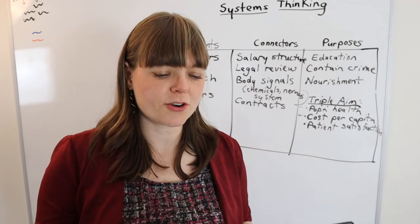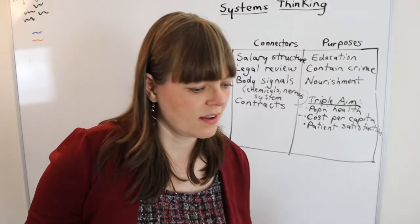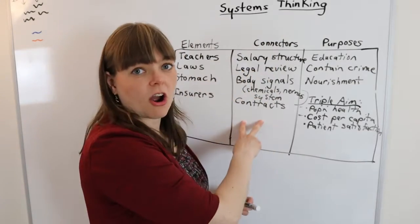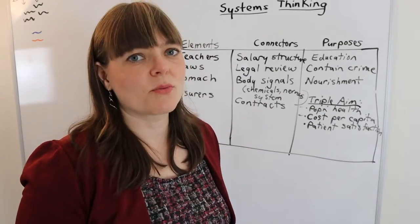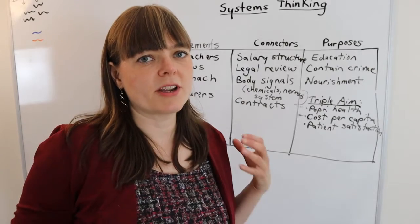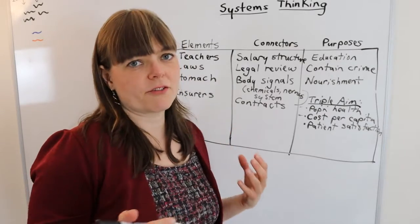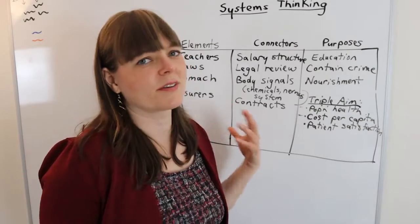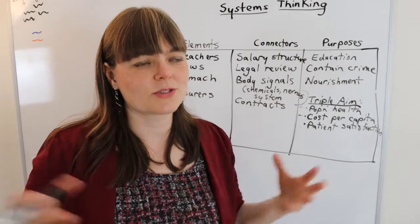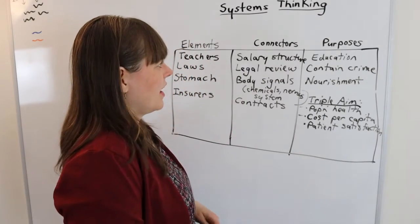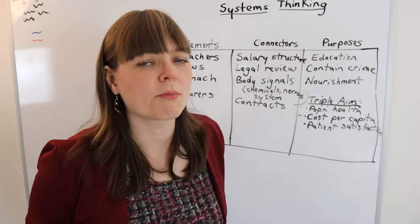Another great quote from that first chapter is many of the interconnections operate through the flow of information. So oftentimes the connectors are information based. One of the reasons this is important for economists is that we're in an information based economy. Information is where so much of the resources of society are being channeled. That includes information about how to improve your business, information about health care, information about how to live your lives. That's sort of the focus of the economy at the moment.